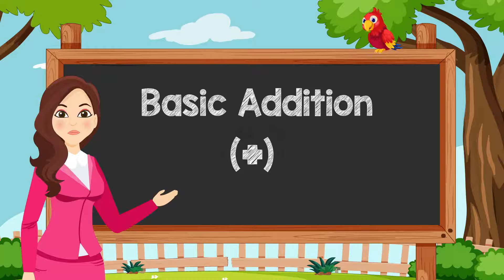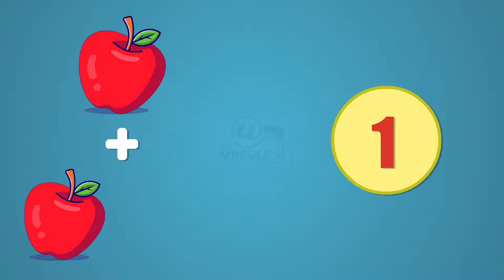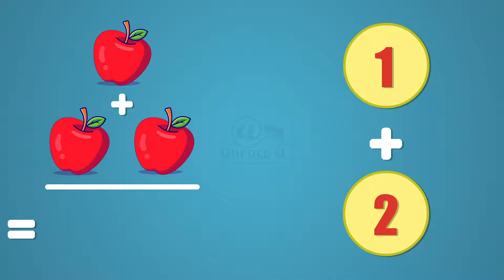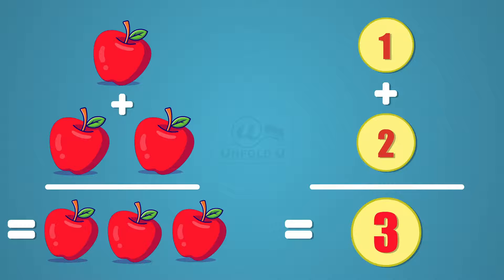We have one apple, plus two apples. We have to find out the total number of apples. Let's count again: one, two, three. So totally we have three apples. One plus two gives three.